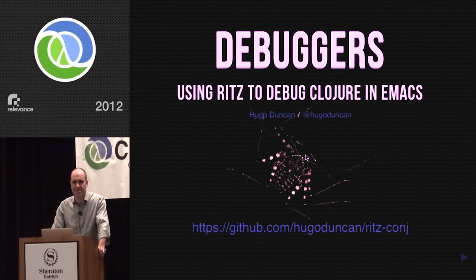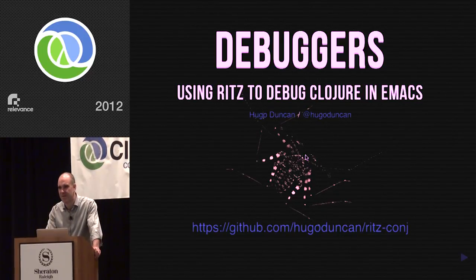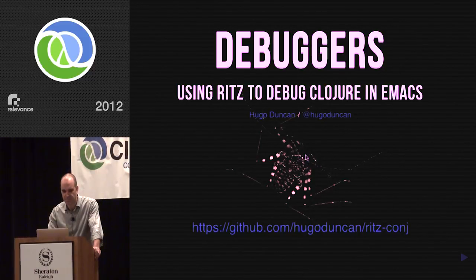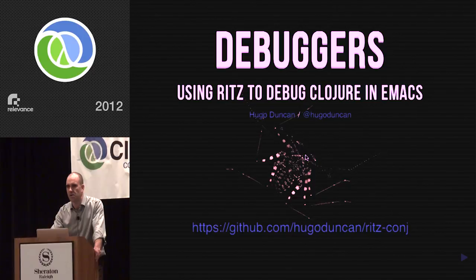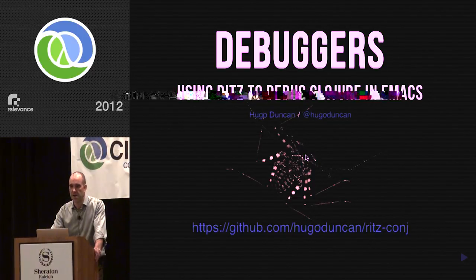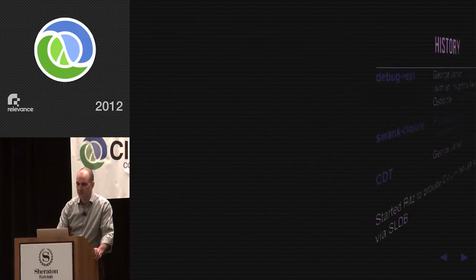Good morning. I'm going to take you from the very declarative world of logic programming to the very stateful world of debuggers. I work full-time on Pallet and do consulting around it, which keeps me busy and lets me spend all my time in the Clojure world. I'm going to be talking about Ritz, which is an open source library to add debuggers for Clojure.